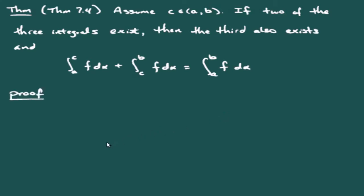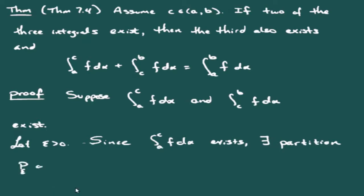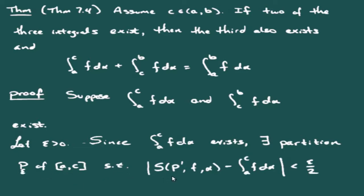Let's look at the proof. Suppose the integral from A to C of f dα and the integral from C to B of f dα both exist. Let ε > 0. Since the integral from A to C exists, there is a partition P_ε of [A, C] such that any Riemann-Stieltjes sum over a partition finer than P_ε differs from the integral by less than ε/2.